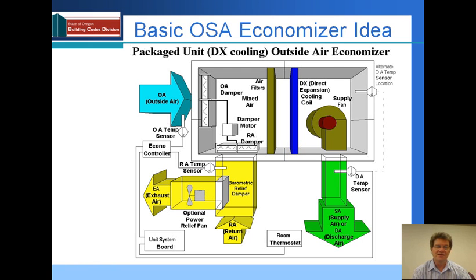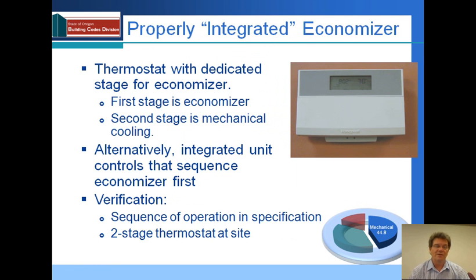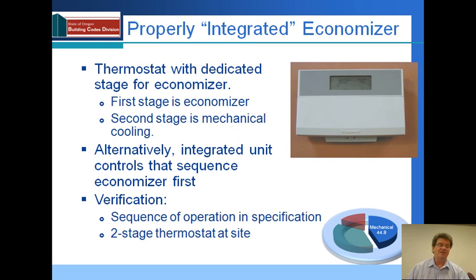In an integrated economizer, it means we operate the outside air economizer partially in conjunction with our cooling coil. In a non-integrated situation, this outside air would be cut off completely when we were above a certain temperature so that only mechanical cooling would be used. One thing that is important for smaller systems for an integrated economizer is to have a two-stage cooling thermostat in the space. The first stage of cooling will operate the economizer when it's available. The second stage of cooling will operate the economizer and the mechanical cooling together. And then when it gets too hot outside, the changeover controls will cut off the economizer.